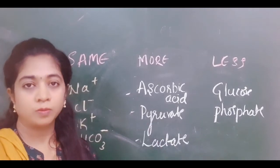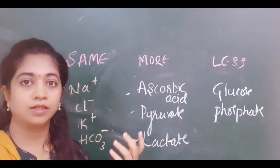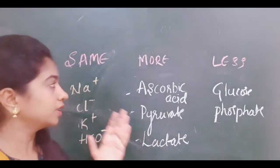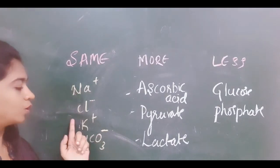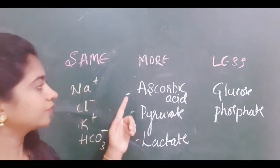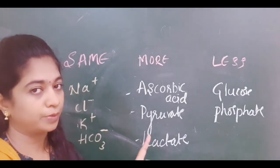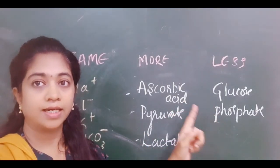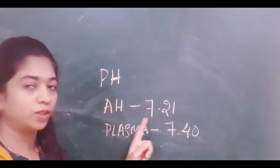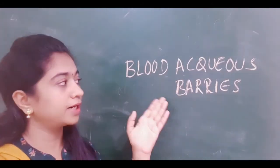Though aqueous humor is formed from plasma, the involvement of ultrafiltration, active transport, and diffusion means its composition differs slightly from plasma. Sodium, chloride, potassium, and bicarbonate are similar to plasma concentration. Ascorbic acid, pyruvate, and lactate are more concentrated in aqueous humor compared to plasma, while glucose and phosphate are less. The pH of aqueous humor is 7.21, whereas plasma pH is 7.4.